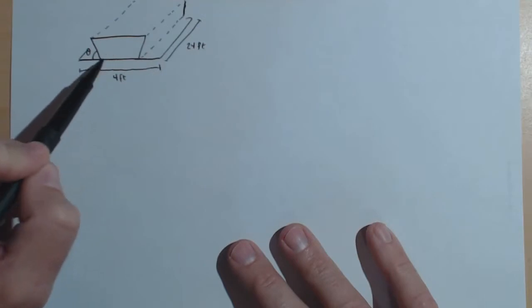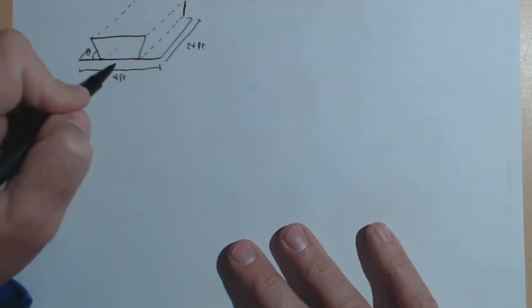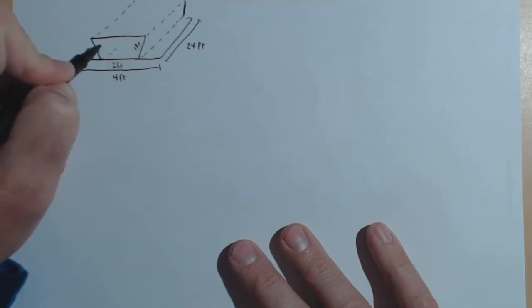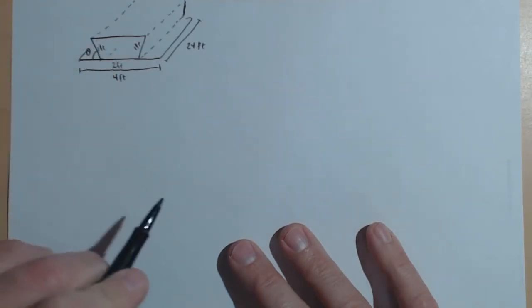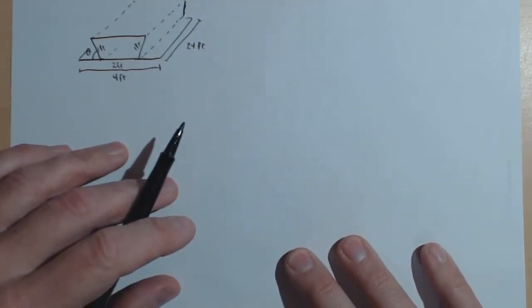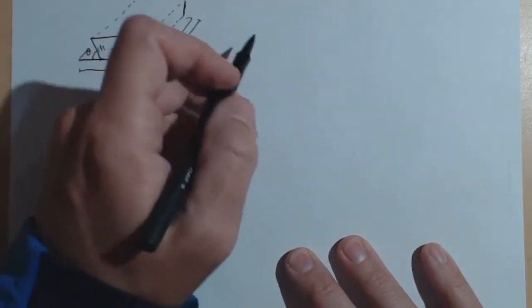There's a bend here and there's going to be a bend over on this side as well. Those sides get folded up to make the trough. Those bends are going to be 2 feet apart, which makes this piece 1 foot and this piece 1 foot. What we want to do is find the theta that will maximize the volume. That tells us we want to get volume as a function of theta.